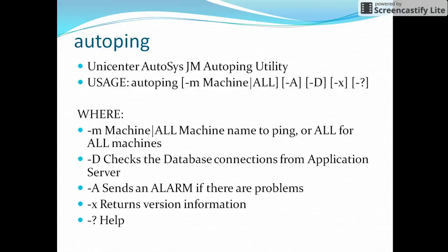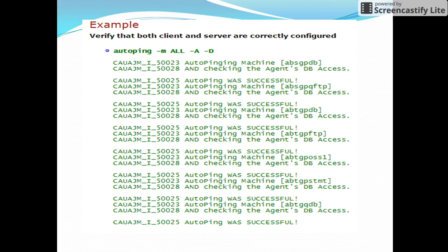We'll check with an example. The command is: auto ping hyphen name all. So it is checking across all client machines. Hyphen a is used for sending an alarm if there is any error — if the machine is not pinging, it will send an alarm. Hyphen d is used to check that communication is proper between the database and the application server. It is checking across all client machines, first with the machine name abs gp db.